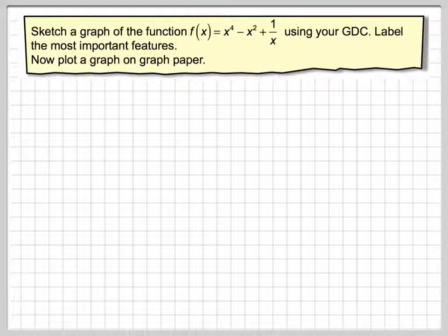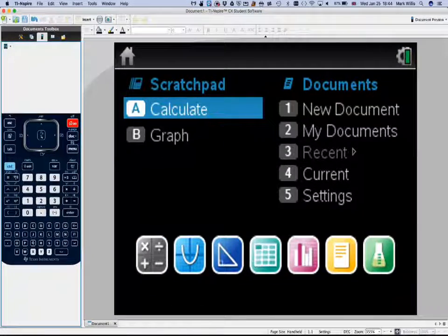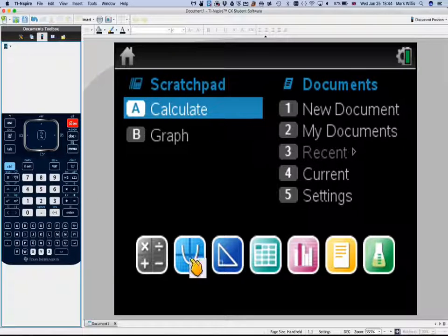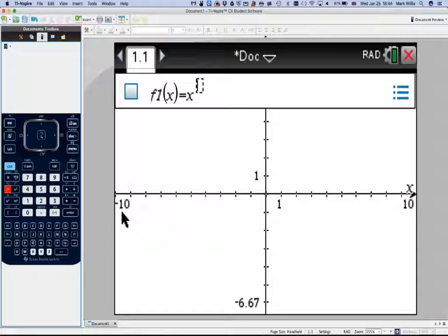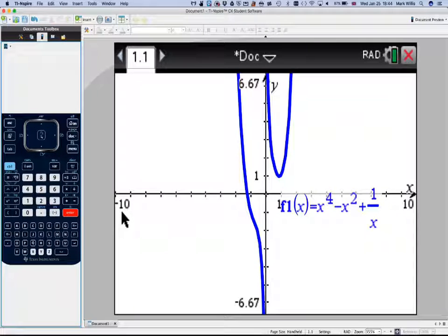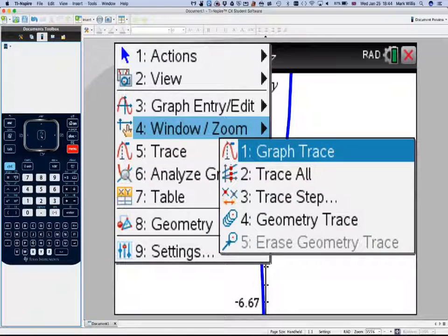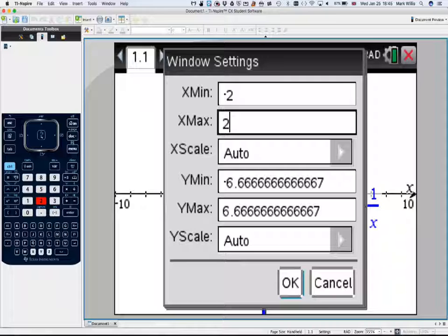In order to do this, we need to use the GDC. So go to the GDC and select the graphing mode, which is this one here, and then put in the function. That's x to the power of 4 minus x squared plus 1 divided by x and then press enter. And we get this function here. If we limit the axis, go to menu and go to window zoom and then window settings, we're just going to set the x axis to minus 2 to 2.